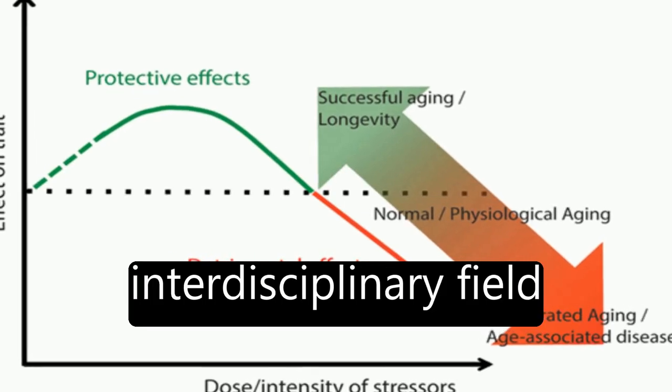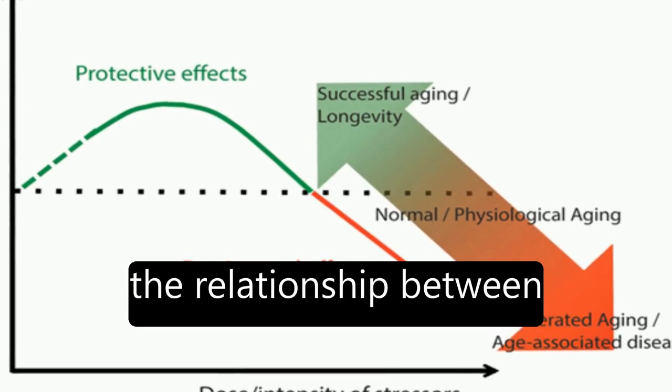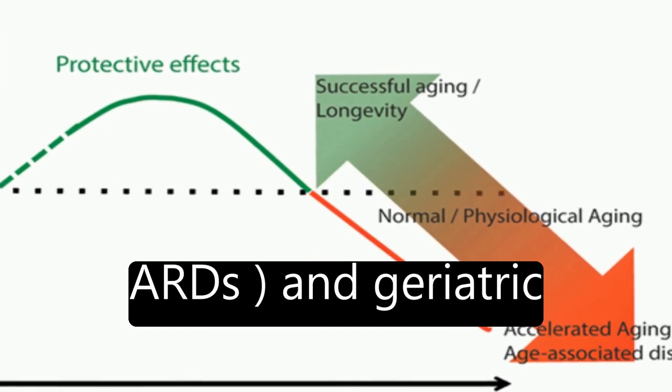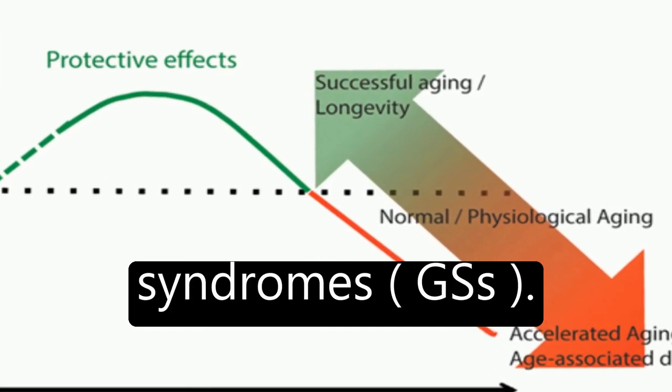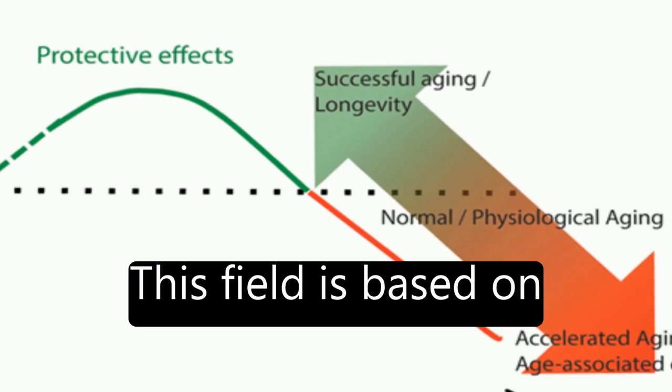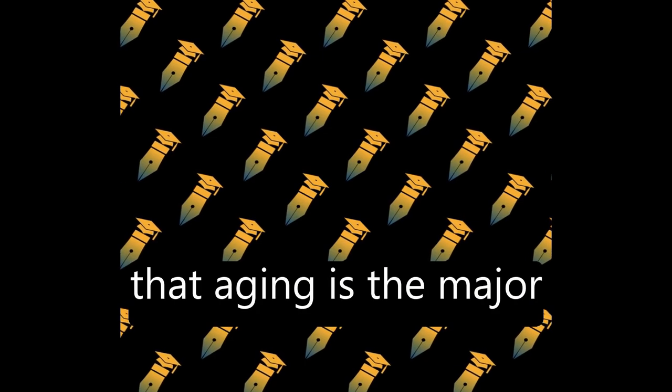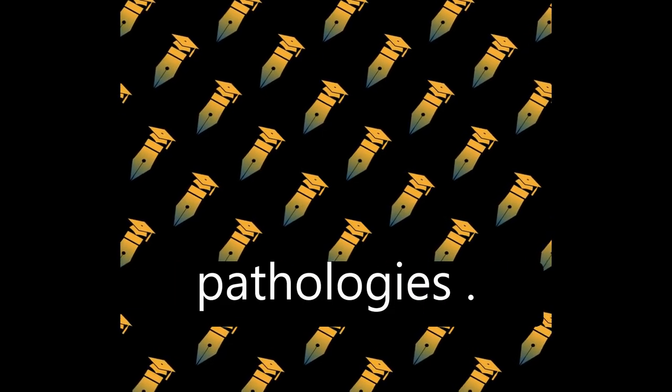Geroscience is a new interdisciplinary field that aims to understand the relationship between aging and chronic age-related diseases (ARDs) and geriatric syndromes (GSs). This field is based on epidemiological evidence and experimental data that aging is the major risk factor for such pathologies.